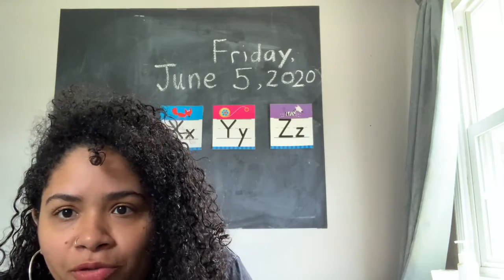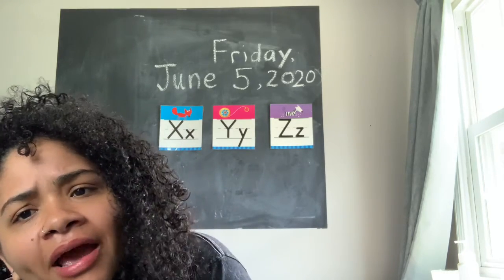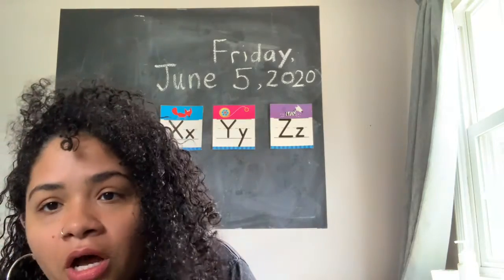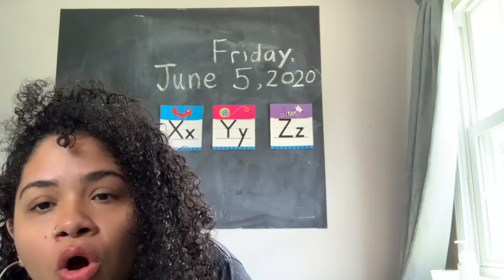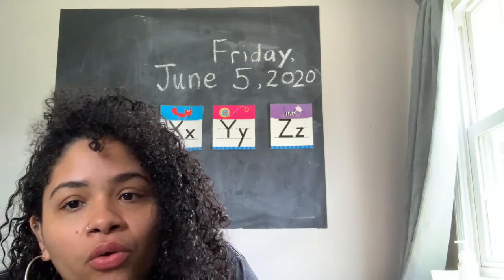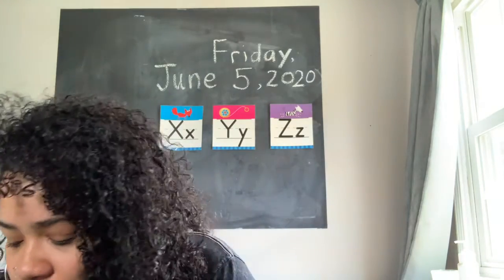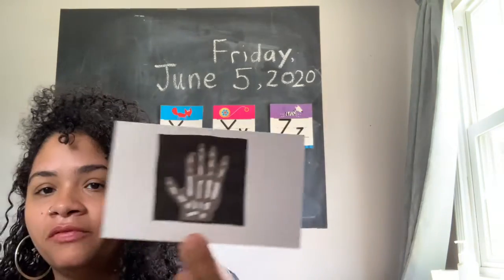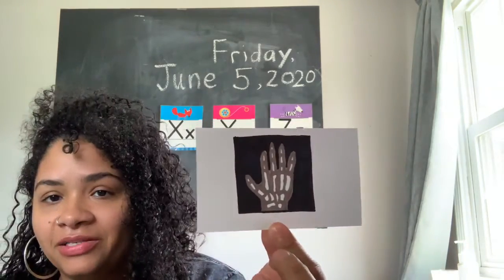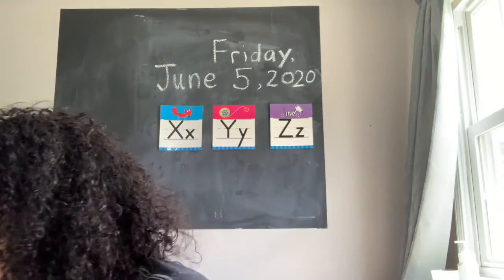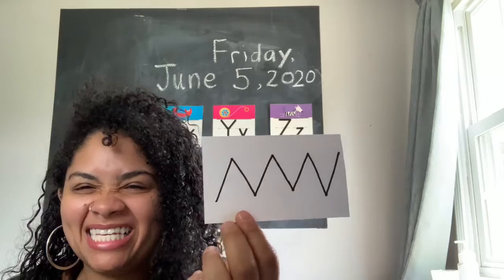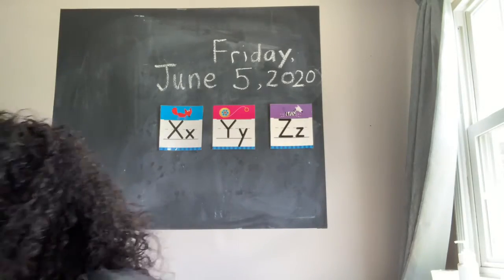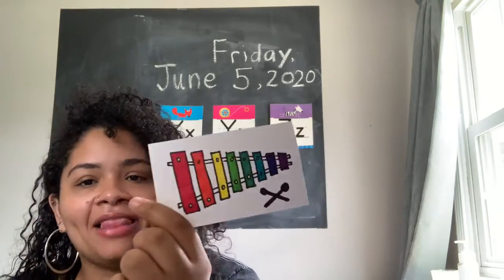I hope you guys remember how to help me with this activity. I have some pictures I'm going to show you, and you are going to help me figure out what letter those pictures begin with. I have a picture of an x-ray, zigzag, a xylophone, yellow, zipper, and yarn.